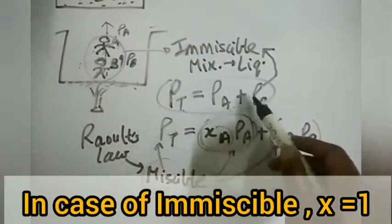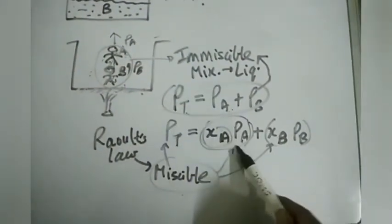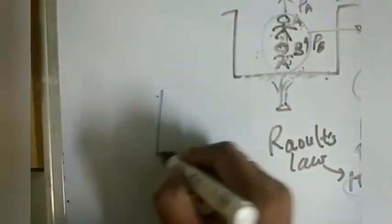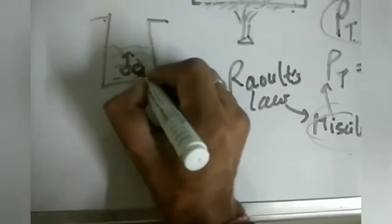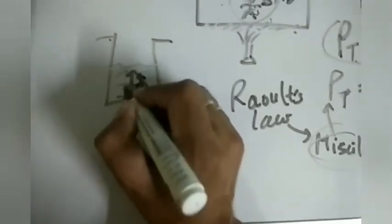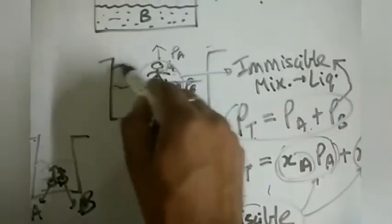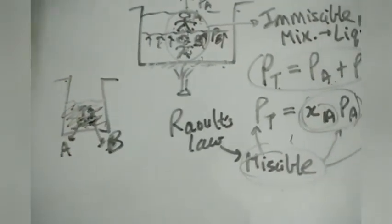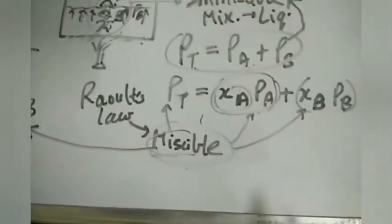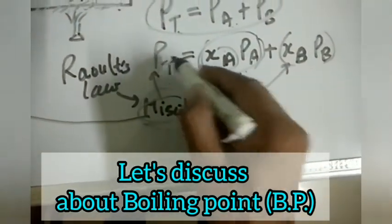Hence the total pressure in the case of miscible liquids is less, while for immiscible the total pressure is more, because both phases are not mixed and want each other to get out fast. In the miscible case, molecules are in competition — both A and B molecules are mixed in one single phase, so they compete with each other to escape. But in the immiscible case, B wants A to move out first because A is above B, so B adds its full pressure to push A out. Therefore PT for the immiscible case is greater than PT for the miscible case.